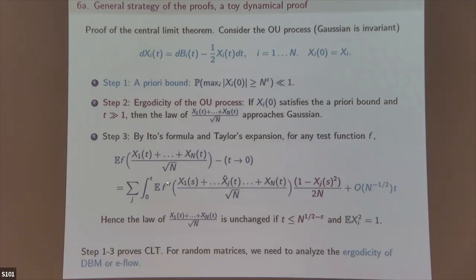[Audience: I don't understand — time is going, so this is the idea:] If you take time t from 0 to √n, the probability doesn't change. From ergodicity, for time of order 1 you're already Gaussian. So you choose time anywhere in between, and that finishes the proof.